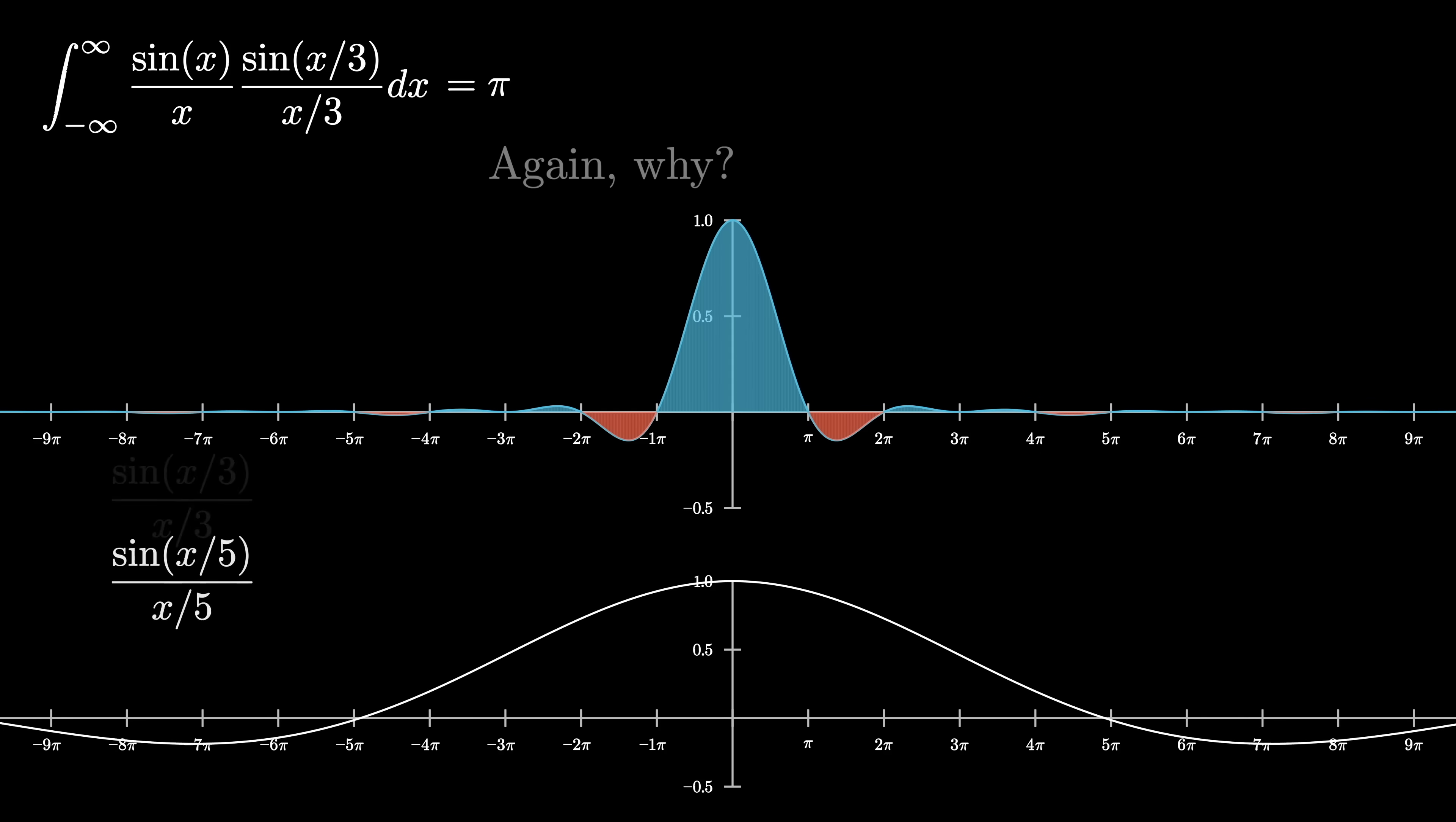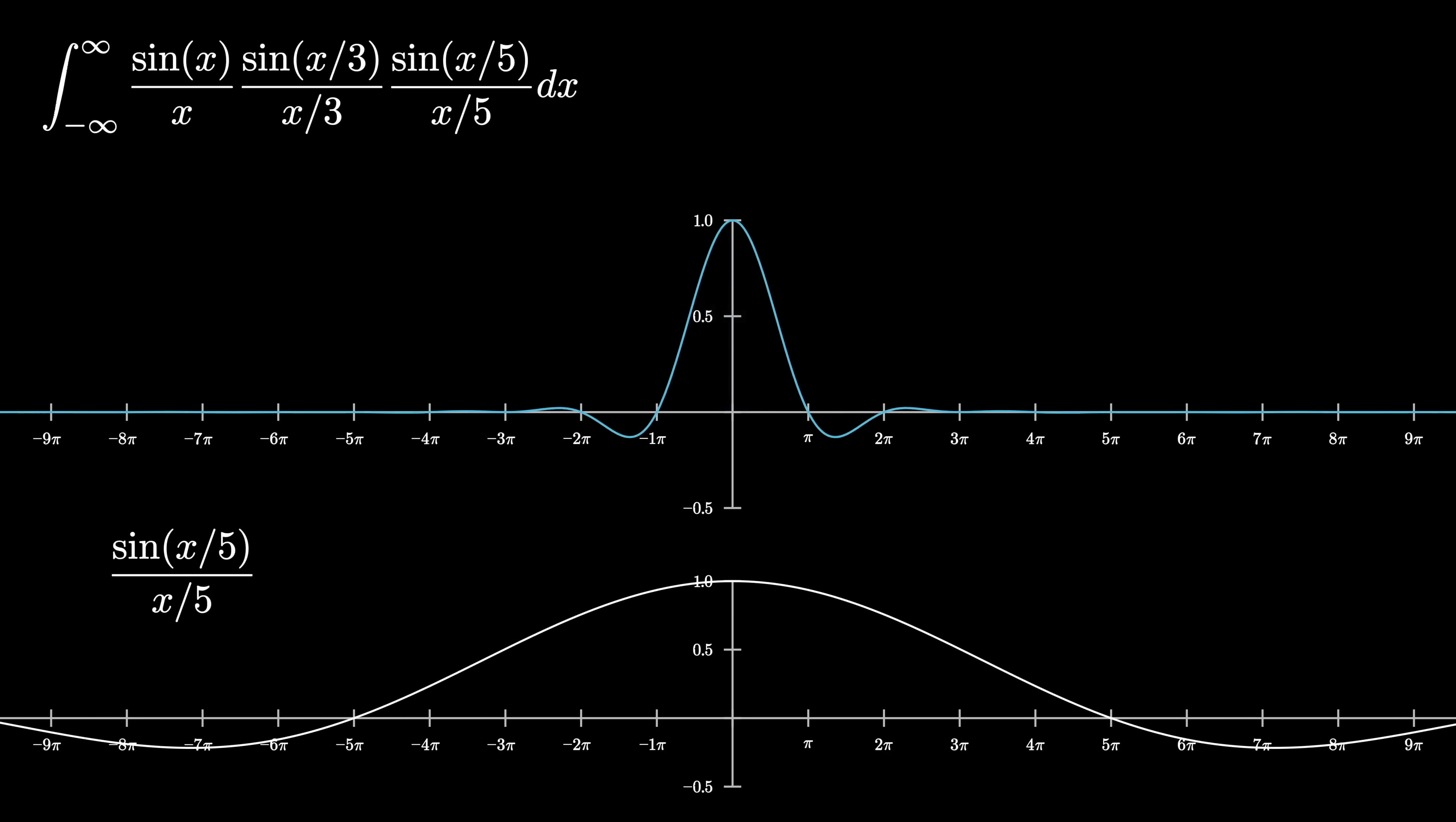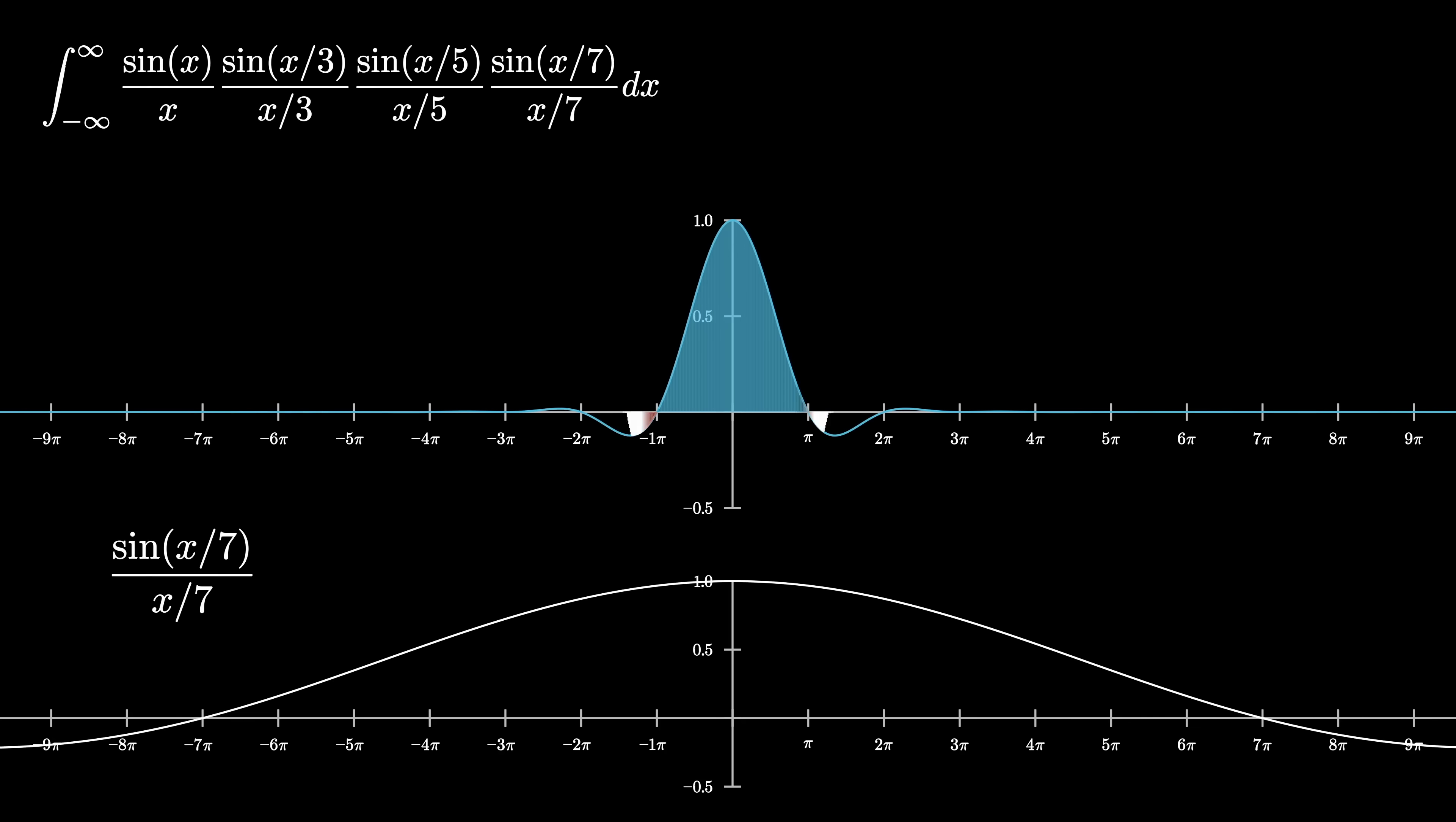And the next step in the sequence was to take an even more stretched out version of this sinc function by a factor of five, multiply that by what we already have, and again, look at the signed area underneath the whole curve, which again, equals pi. And it continues on like this. With each iteration, we stretch out by a new odd number and multiply that into what we have.